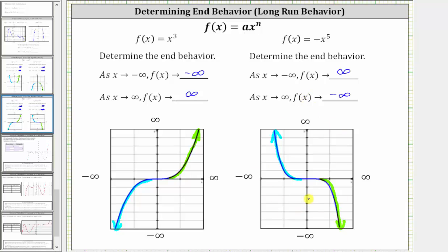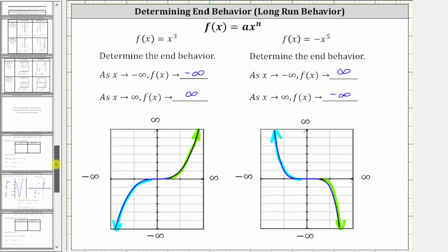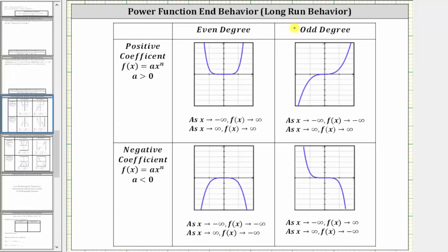Let's summarize with a table. When we have a power function in the form a times x raised to the power of n: if the coefficient a is positive, we look at the top row; if a is negative, we look at the bottom row. If the degree is even, we look at the first column; if the degree is odd, we look at the second column. In our four examples, we looked at each of these four cases. I hope you found this helpful.